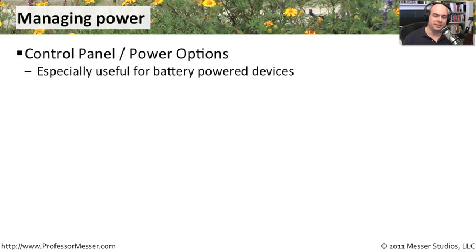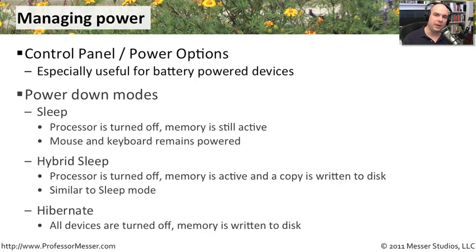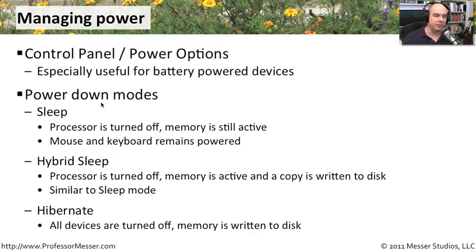Whether you're plugged in on a desktop or on a mobile laptop running on battery, you may want to configure how Windows uses power. This is very useful — you can determine when your display powers off and when hard drives spin down to conserve power, which is especially helpful on battery. You'll find these configuration settings under Control Panel in Power Options. When looking at power options, you have choices for what happens when you press the power button, with different terms: sleep, hybrid sleep, and hibernate.